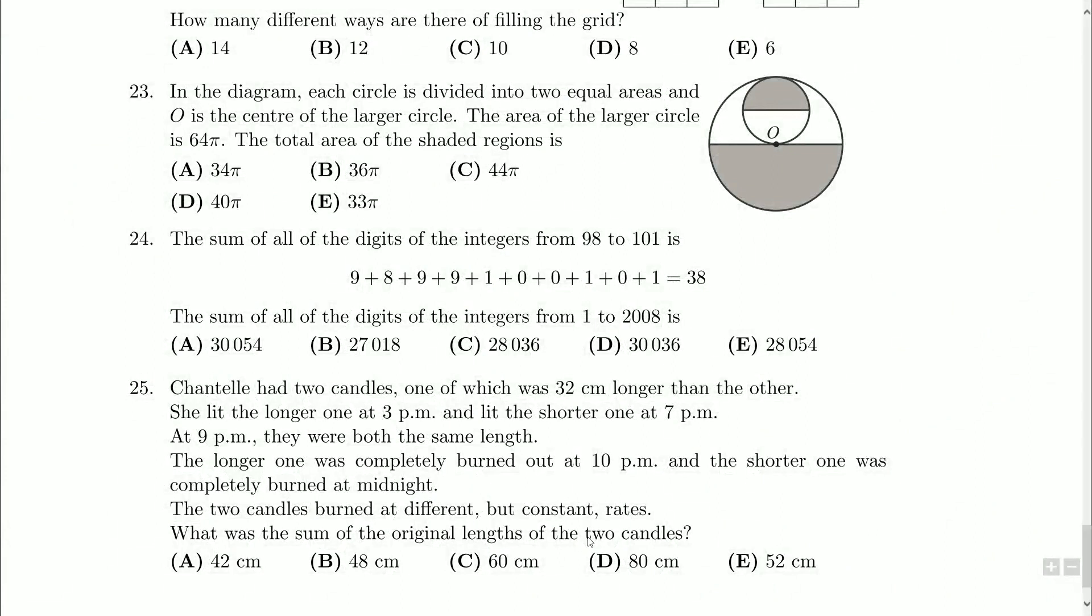What do you got for us contest? Well, question 24 here says the sum of all the digits of the integers from 98 to 101 is 9 plus 8, they're just summing all the digits, plus 100 plus 101, so these are where all these digits are coming from, and 9 plus 8 plus 9 is 38. The sum of all the digits from the integers from 1 to 2008. That's gonna be a bit of a tall order.